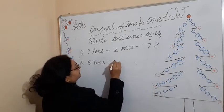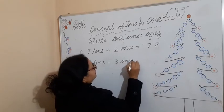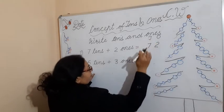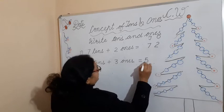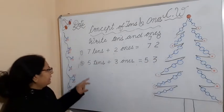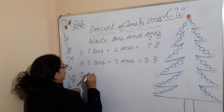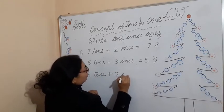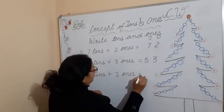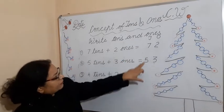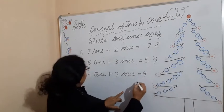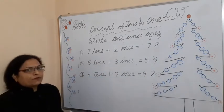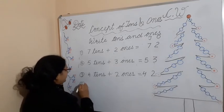Second example: five tens plus three ones is equal to — write five under T and three under O — that becomes fifty-three. Third example: four tens plus two ones — write four under T and two under O — that becomes forty-two.